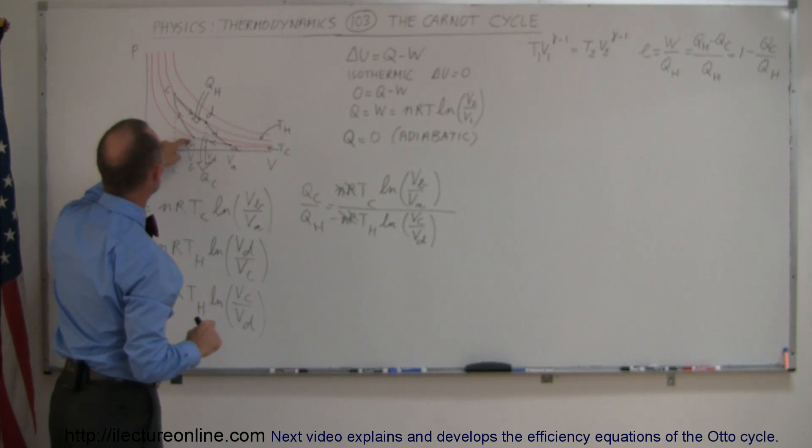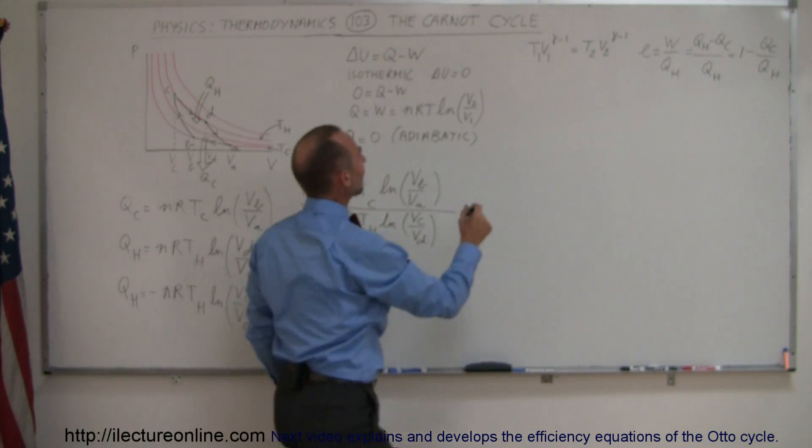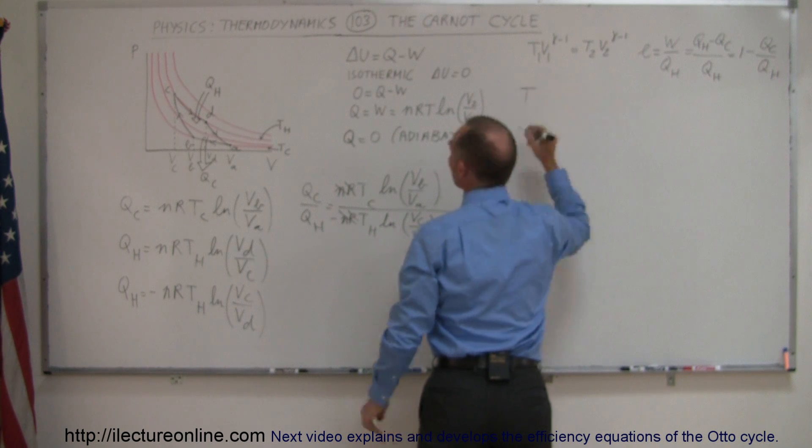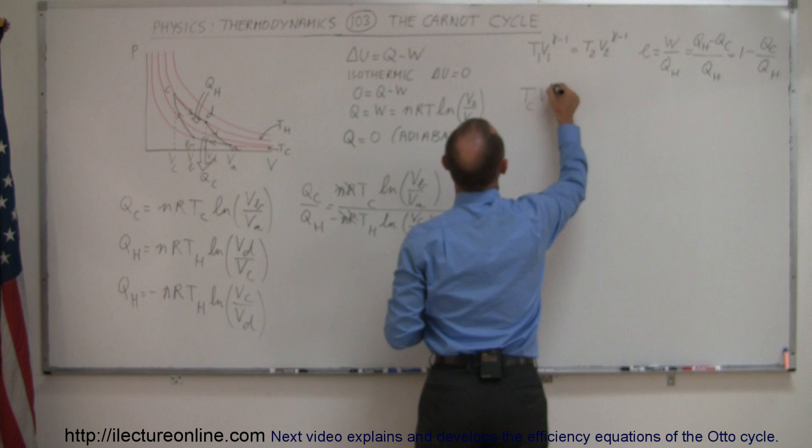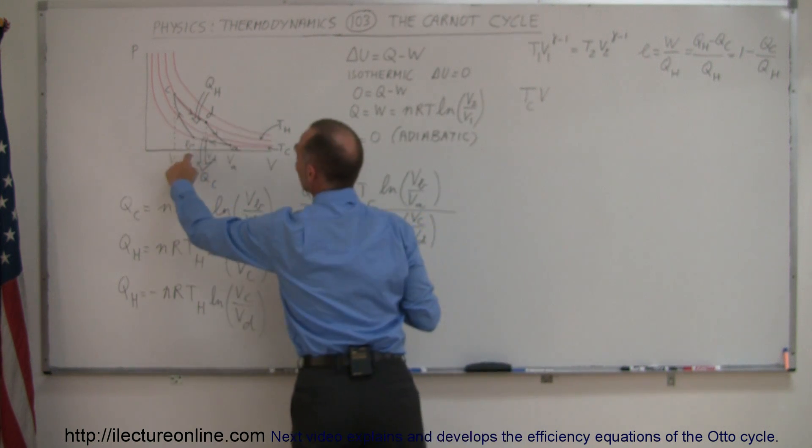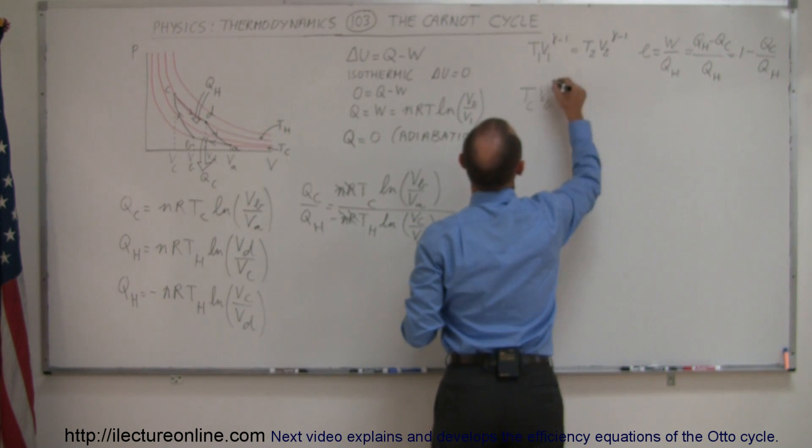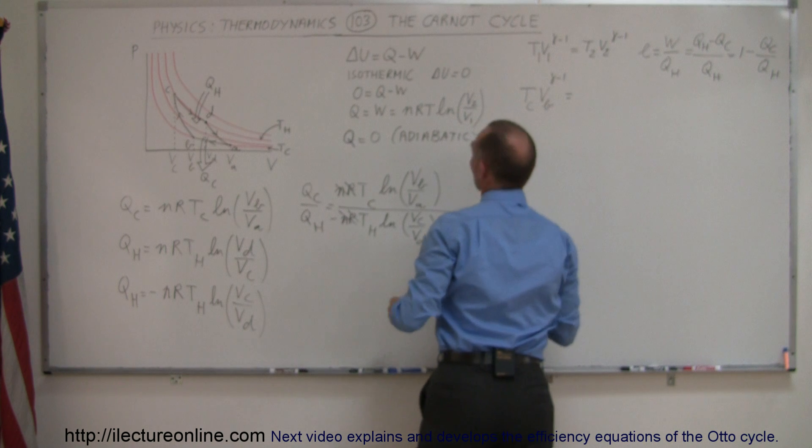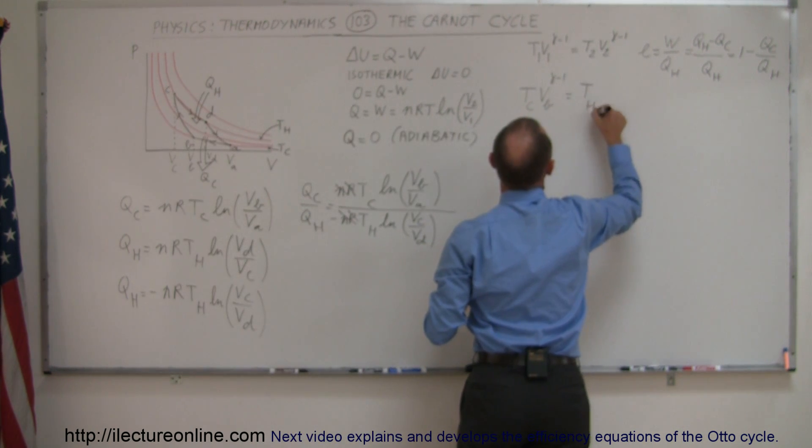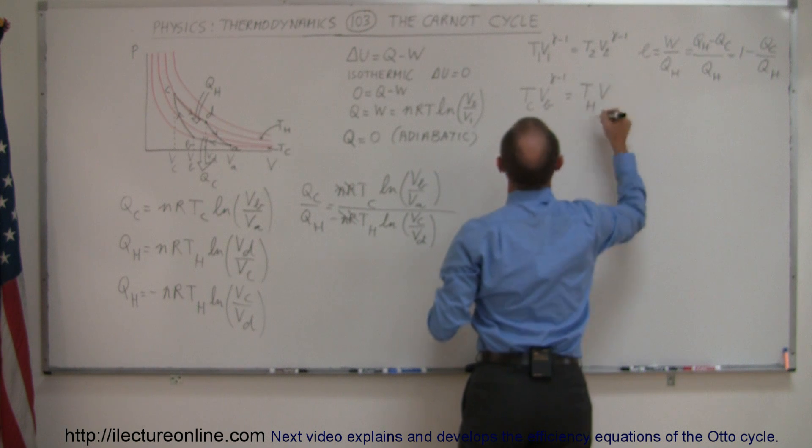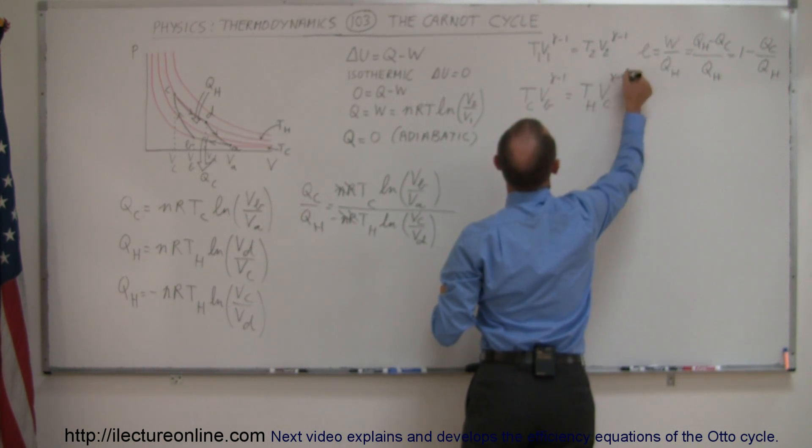So, starting with going from B to C, we can write temperature at B, and of course temperature at B is T_cold times V at B - and V at B, that's simply V at B to the gamma minus 1 - equals temperature at C, which is T_hot, times V at C to the gamma minus 1.